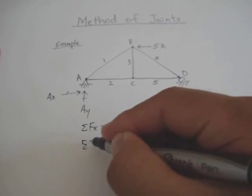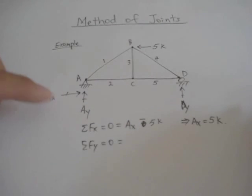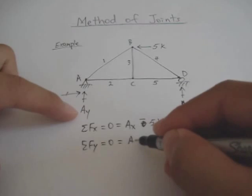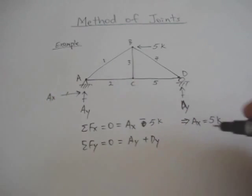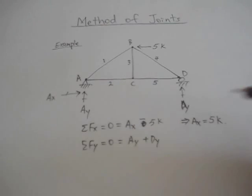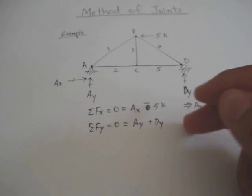Now you can solve the forces in the y. Sum Fy equals zero. Now you have the Ay going up and the Dy going up. So they are all positive. Now you can't solve that equation yet because you have two unknowns and one equation.